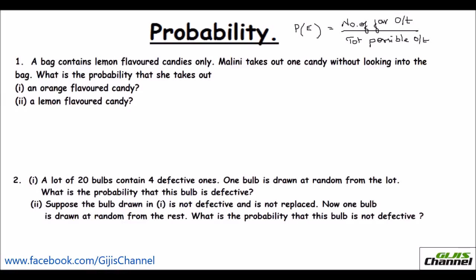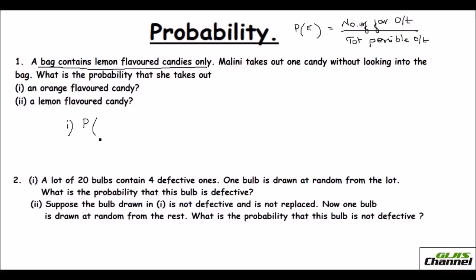The first question says a bag contains lemon flavored candies only. Malini takes out one candy without looking into the bag. What is the probability that she takes out an orange flavored candy? Since the bag contains only lemon flavored candies, there is no chance of picking out an orange flavored candy. So the probability of getting an orange candy is zero — it is an impossible event.